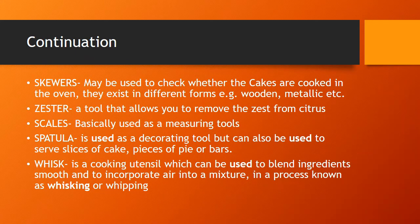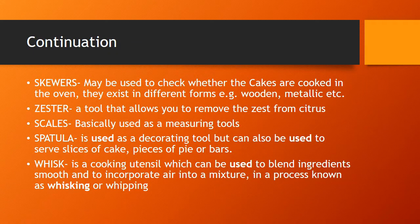A zester is a tool that allows you to remove the zest from citrus fruits. The zest is the outer layer of a citrus fruit, which is used in baking. You use a zester tool to remove it.